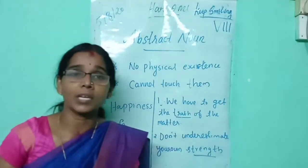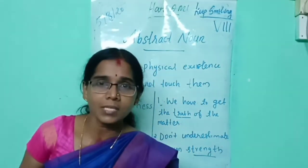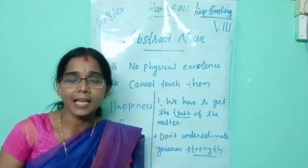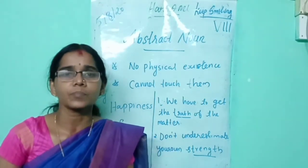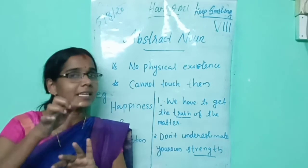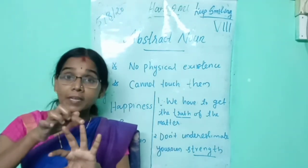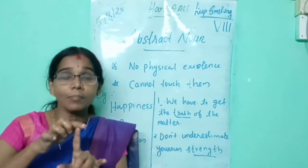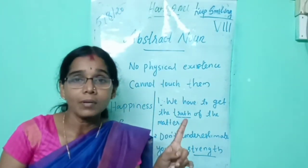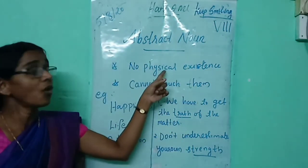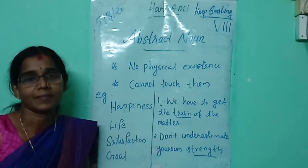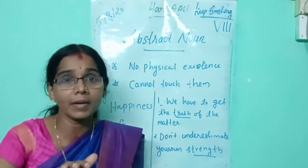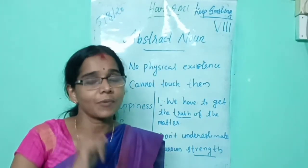What are the points you should remember about nouns? Noun is the name of a person, place, animal, thing, feelings or an idea. Common noun means general name. Proper noun means specific name. Abstract noun has no physical existence and we cannot touch it. These are the points you should remember before doing the exercise from your grammar text.